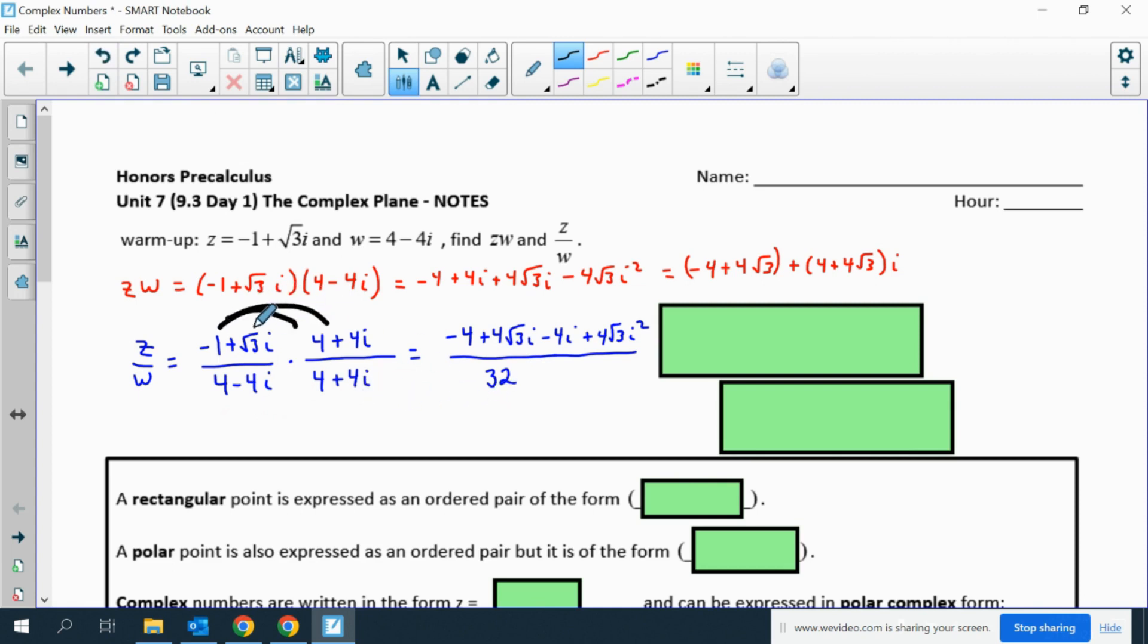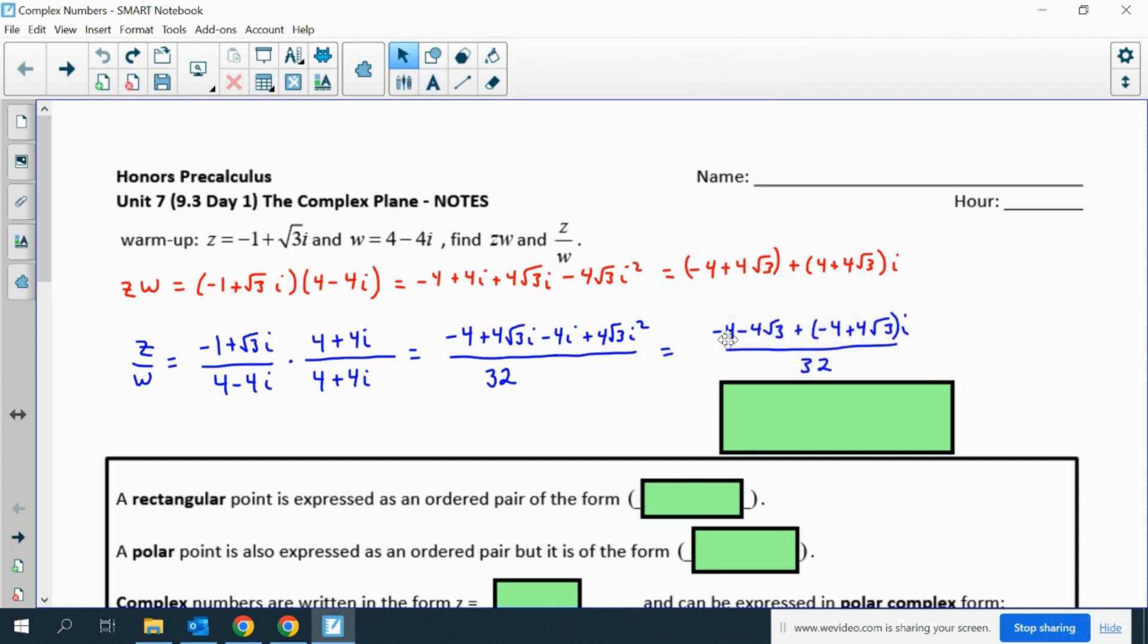Then the numerator, we use the distributive property. Remember i squared is negative 1, so we end up with this. Notice in this particular problem, all of these values are divisible by 4, so we can rewrite it like this.